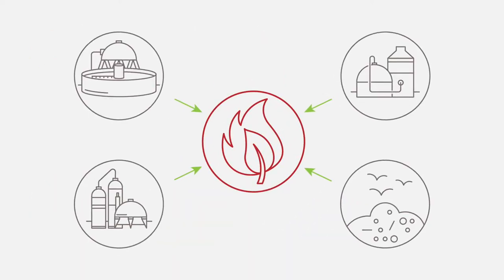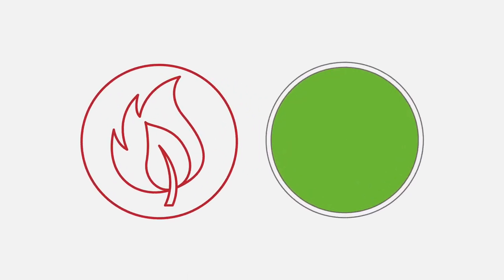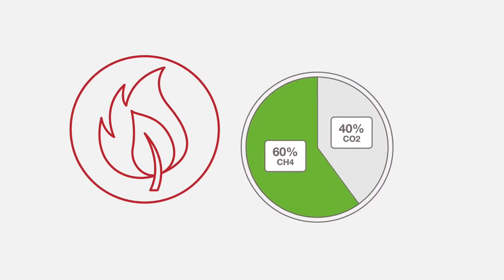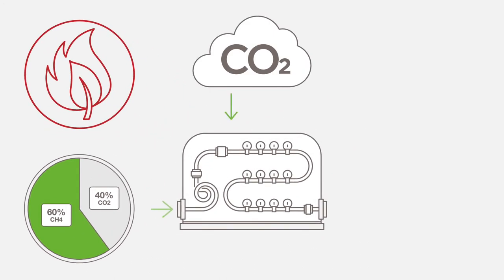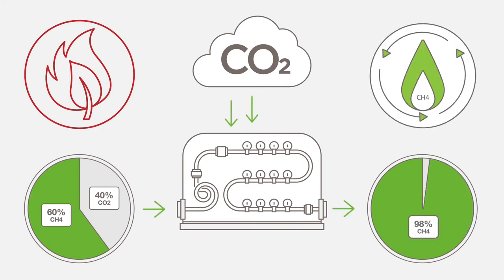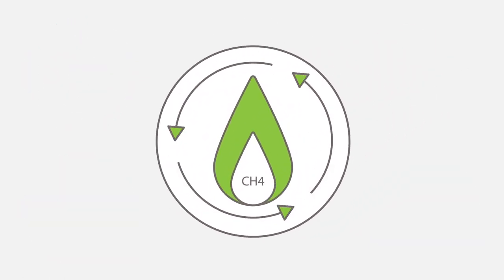Biogas typically contains 50-60% methane and 40-50% carbon dioxide. Biogas upgrading plants use innovative technology to remove the carbon dioxide from the biogas to produce almost pure methane. This gas is called biomethane or renewable natural gas.